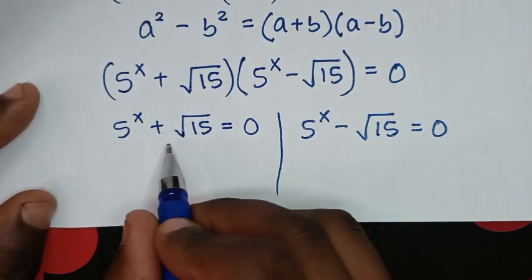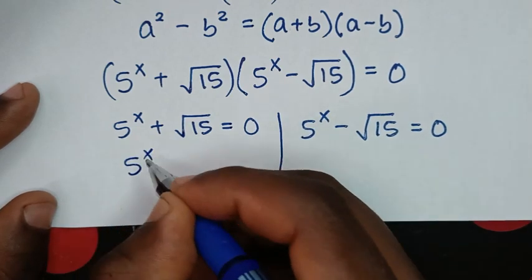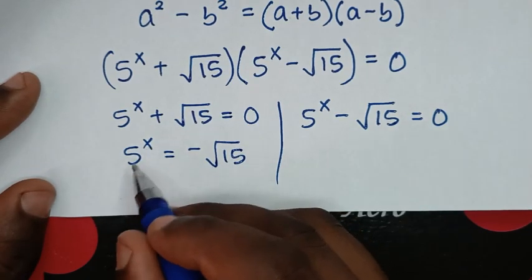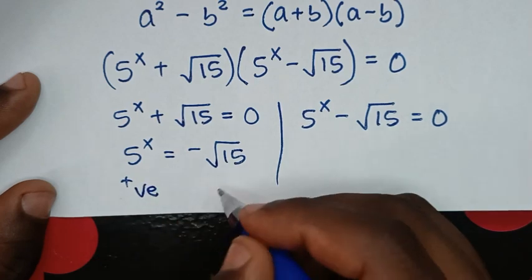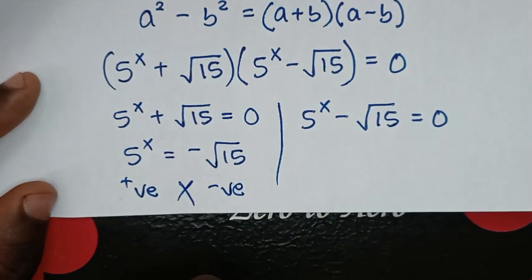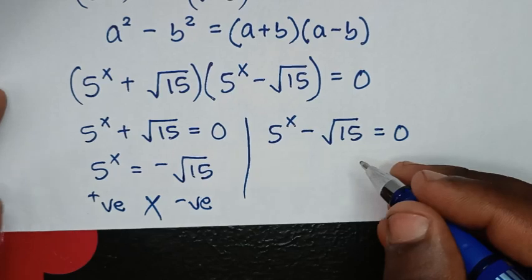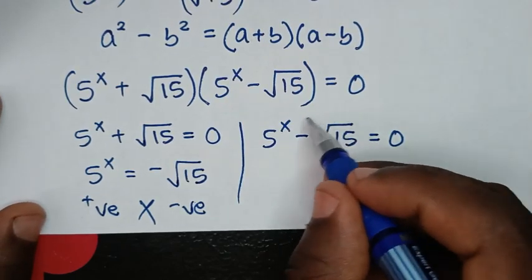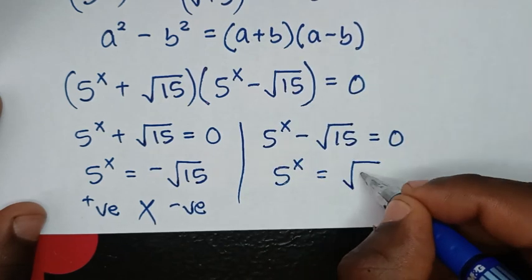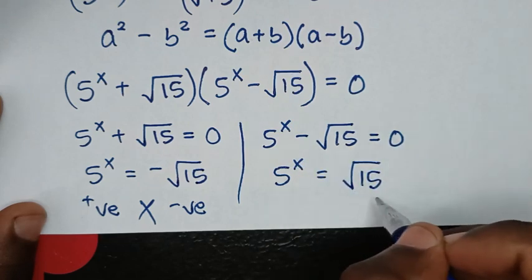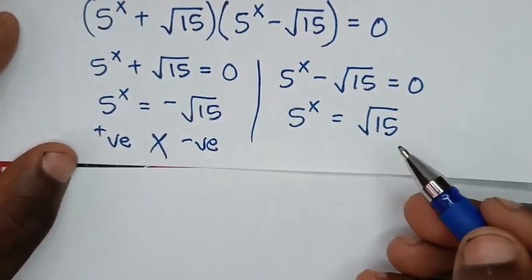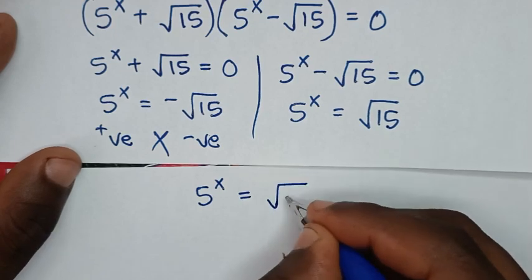From the first solution, taking square root of 15 to the right side gives 5 power of x equals negative square root of 15. However, 5 power of x for any value of x is always a positive value, and this result is negative. Since positive cannot equal negative, this first solution is not possible and we reject it.